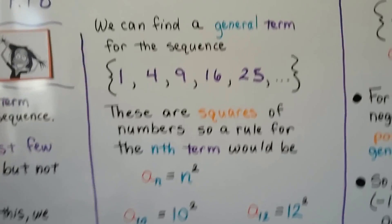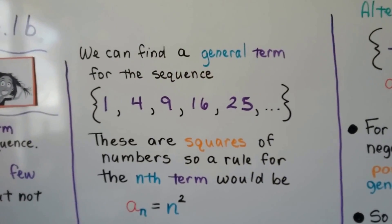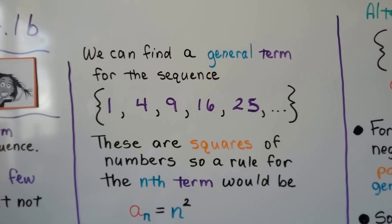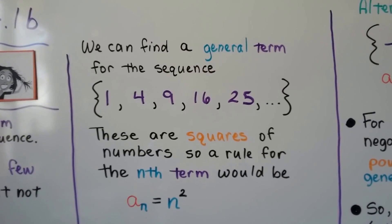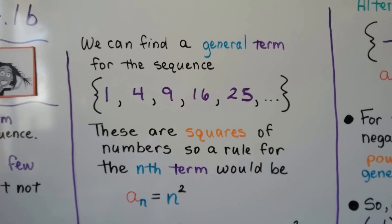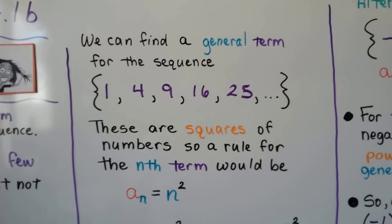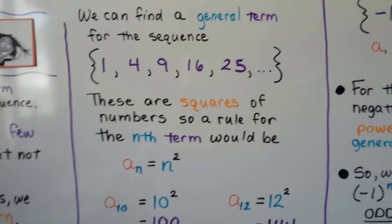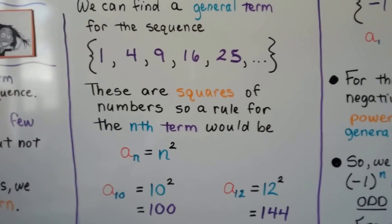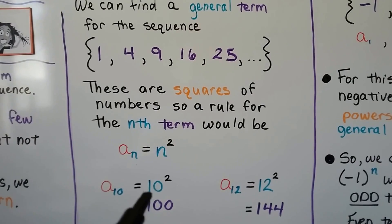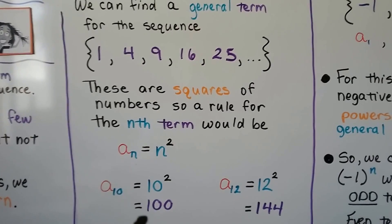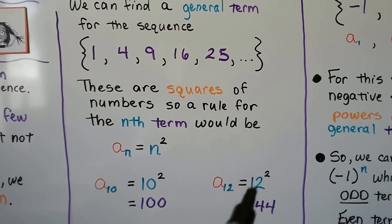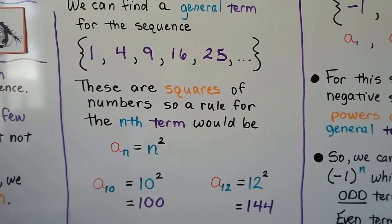We can find a general term for the sequence one, four, nine, sixteen, twenty-five. These are squares of numbers, so the rule for the nth term would be a sub n equals n squared. We could find the tenth term — we just do ten squared, that gives us a hundred. We could find the twelfth term — twelve squared gives us 144.